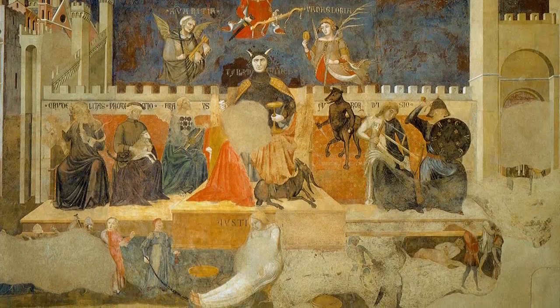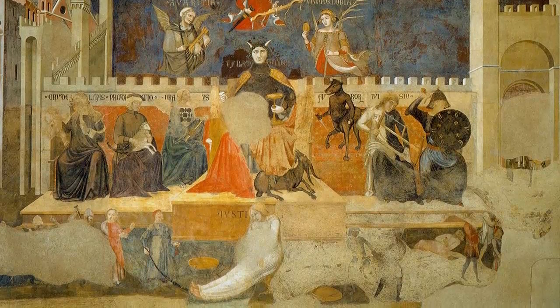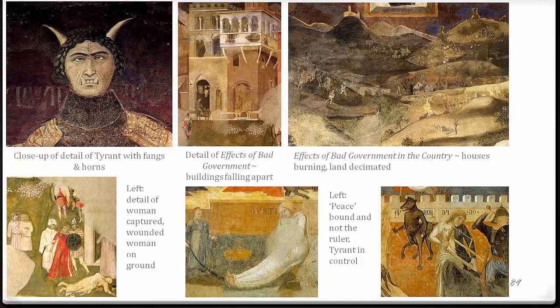Close-up details of the fresco: the top left shows the tyrant with fangs and horns. During bad government, you see a woman who has been captured and another lying wounded on the ground. Buildings fall apart and are derelict; even in the countryside houses are burning and the land is left decimated. We see Peace is bound up — she is not the ruler because the tyrant is in control.